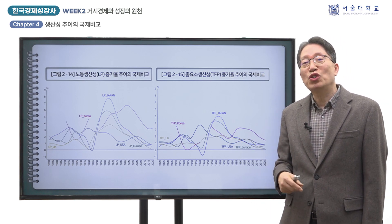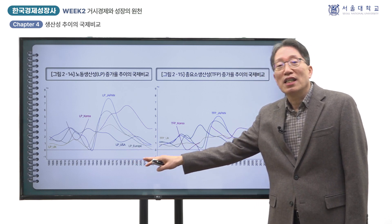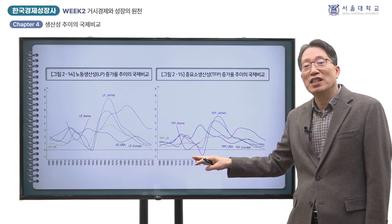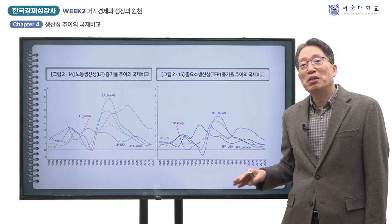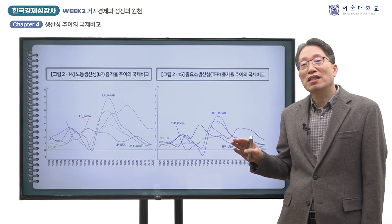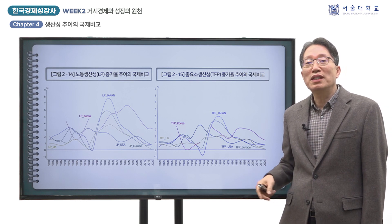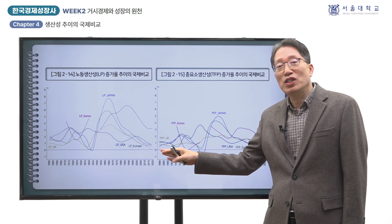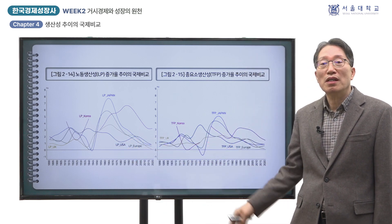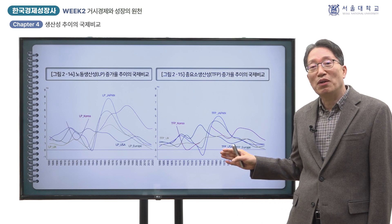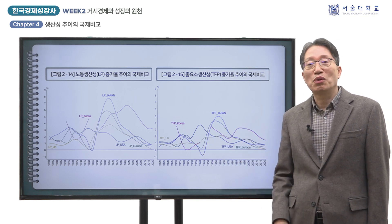주요 국가들의 생산성 증가율 추이를 보면 미국의 경우 생산성이 급속히 증가한 시기가 세 차례 나타났습니다. 제1차 세계대전기, 대공황에서 제2차 세계대전으로 이어지는 시기, 그리고 1990년대를 전후한 시기가 그것입니다. 미국이 생산성 증가를 선도하고 그 뒤를 이어 다른 유럽 국가들이 따라가는 양상을 보였으며, 제2차 세계대전 이후에는 유럽, 일본, 영국의 노동 생산성이 급속히 증가하여 상대적으로 정체되어 있던 미국과 커다란 대조를 보였습니다.